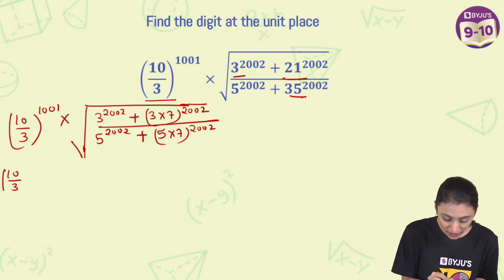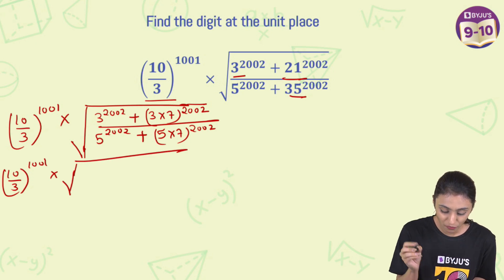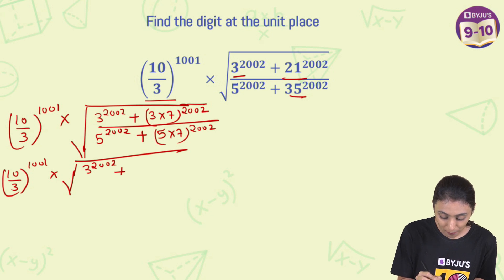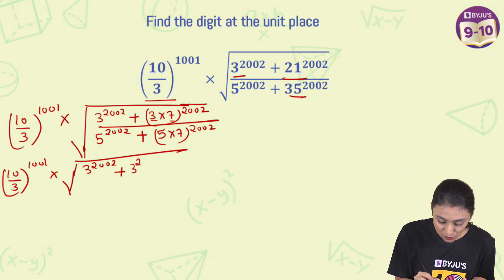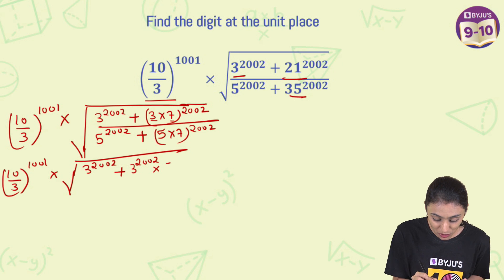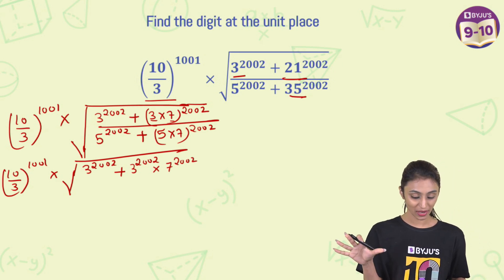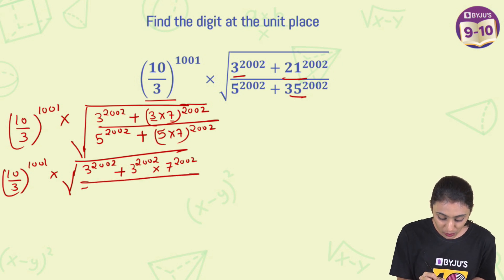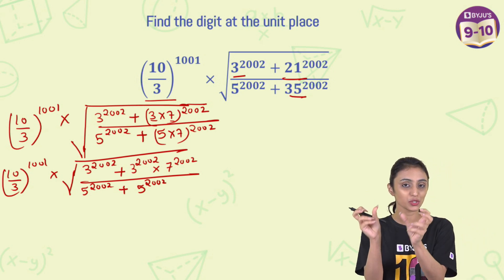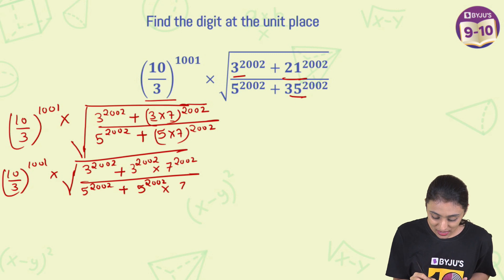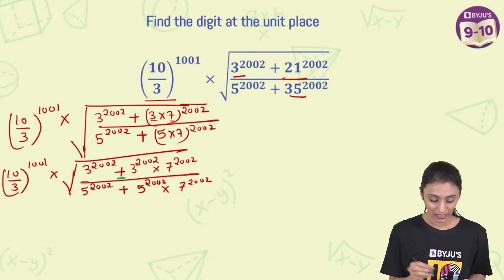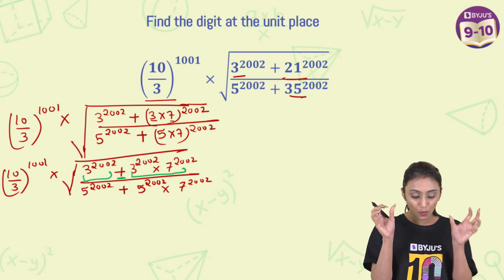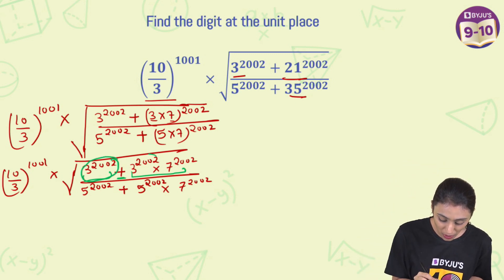So this can be written as (10/3) to the power 1001 times the square root of: 3 to the power 2002 plus (3 times 7) to the power 2002. Since the power 2002 applies to both 3 and 7, this becomes 3 to the power 2002 plus 3 to the power 2002 times 7 to the power 2002. We can observe that 3 to the power 2002 is common in both terms of the numerator.